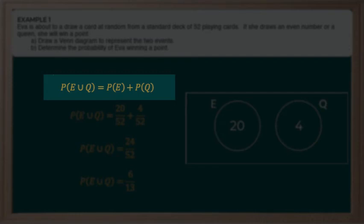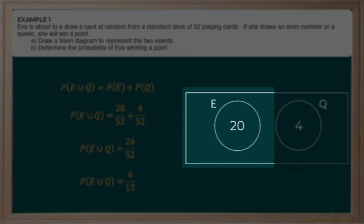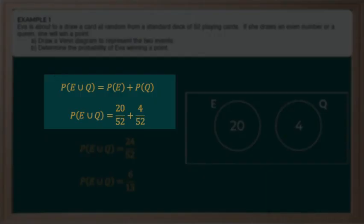Since these events are mutually exclusive, we simply need to calculate the probability for each event and then add them together. We've already determined the favorable outcomes for event E, which is the even number. So we said there are 20 favorable outcomes out of a total 52 possible outcomes in the deck. So our probability for event E is going to be 20 out of 52.